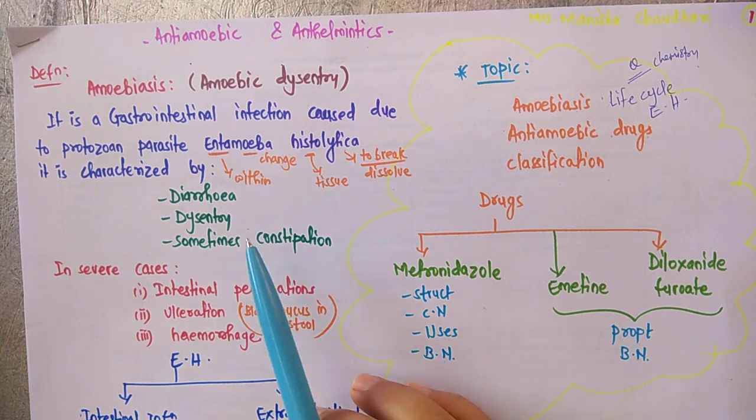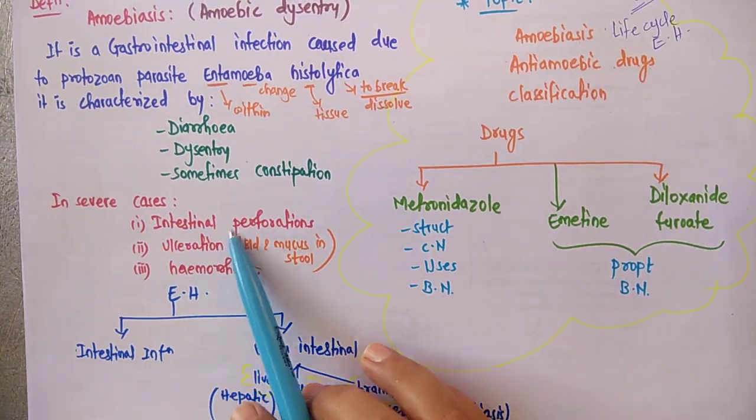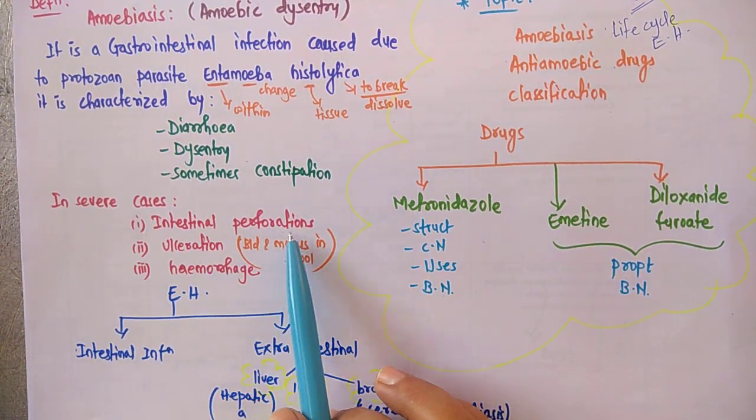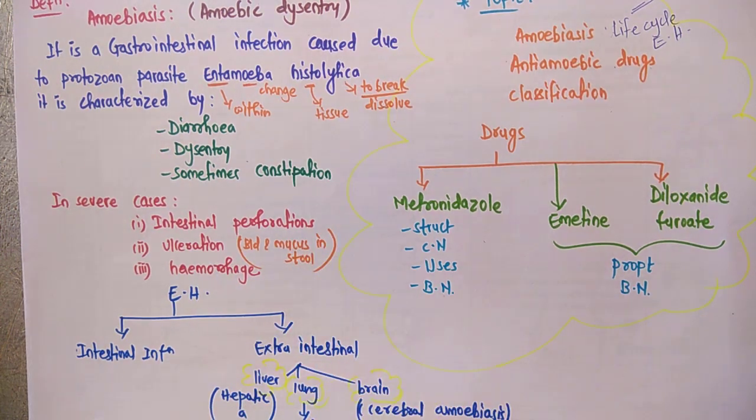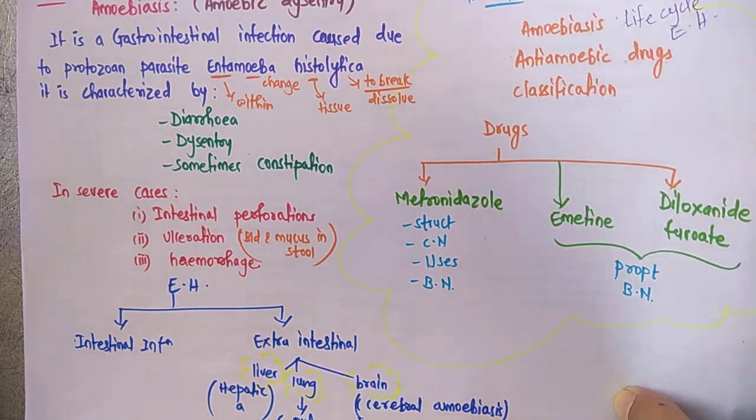In severe cases, it produces intestinal perforations as well as ulcerations and hemorrhage. Anti-amebic drugs, as you know, since amoebiasis is caused due to Entamoeba histolytica—